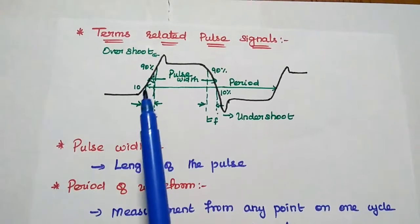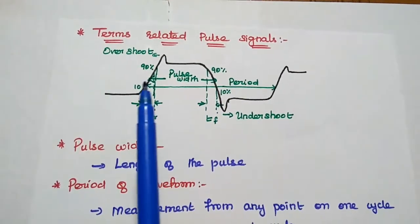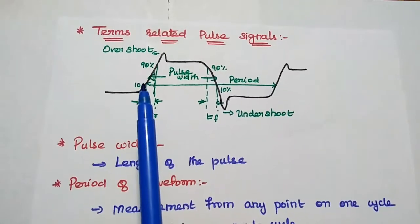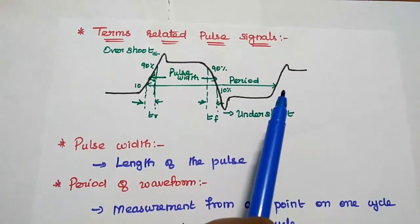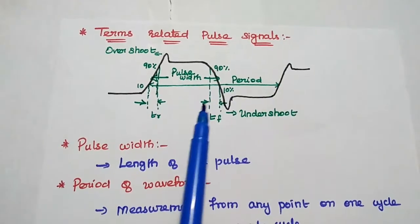Next is period of the pulse signal. It is the measurement from any point on one cycle to the same point on the next cycle. This distance is known as period of the waveform.